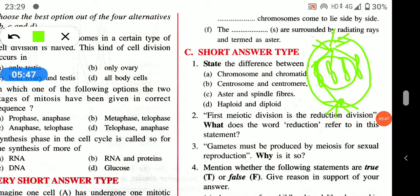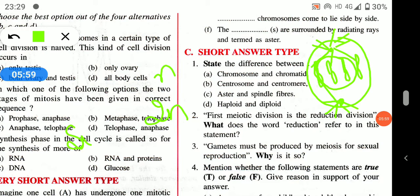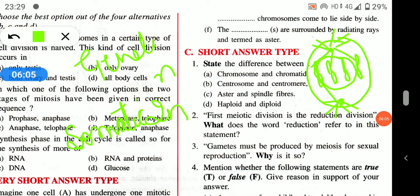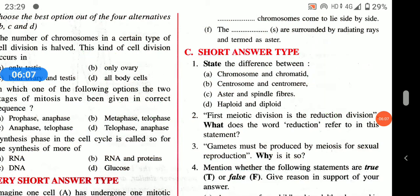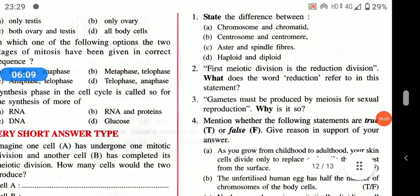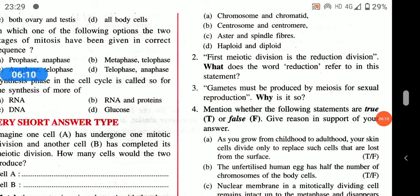The difference between haploid and diploid cells: a haploid cell contains n number of chromosomes, while a diploid cell contains 2n chromosomes. All somatic cells are diploid and all gametic cells are haploid.